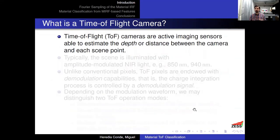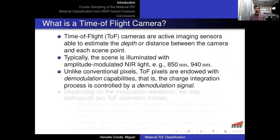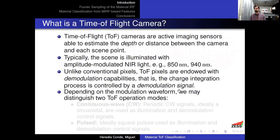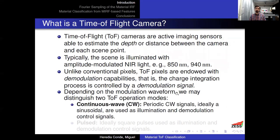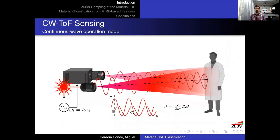How can we put time-of-flight sensors into the game? Time-of-flight cameras are active sensors — they emit light into the scene and estimate distances between the camera and each scene point. They typically emit near-infrared light and, unlike conventional pixels, are endowed with demodulation capabilities, meaning the integration process at each pixel is controlled by a demodulation signal. Depending on the modulation and demodulation waveforms, we classify these systems as continuous wave or pulsed ToF. In this work we consider exclusively continuous wave ToF systems with close-to-sinusoidal modulation.